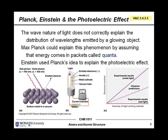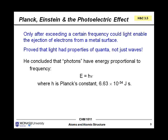Einstein then went on to use Planck's idea to explain the photoelectric effect. The photoelectric effect was an observation that when you shone light on a metal surface you could get it to eject electrons. But it was only above a certain frequency that you would see this phenomenon. Below a certain cut-off point you wouldn't see the ejection of any electrons whatsoever. And Einstein proved that light had these properties of quanta, not just waves.